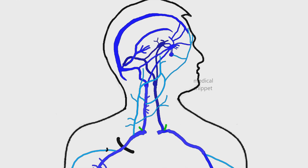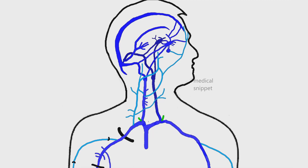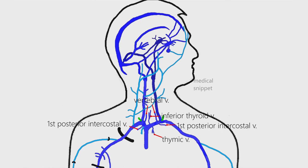This completes the venous system of the head and neck. Now let's discuss the venous system of the thorax and abdomen. The right and left brachiocephalic veins join to form the superior vena cava, which drains into the right atrium. The tributaries of each brachiocephalic vein are the vertebral veins, inferior thyroid veins, thymic veins, first posterior intercostal veins, and the internal thoracic veins.